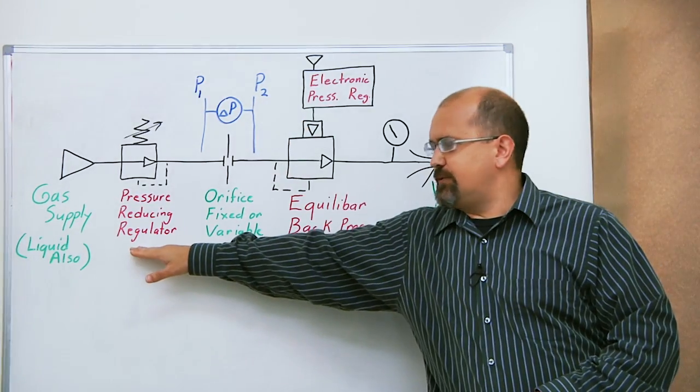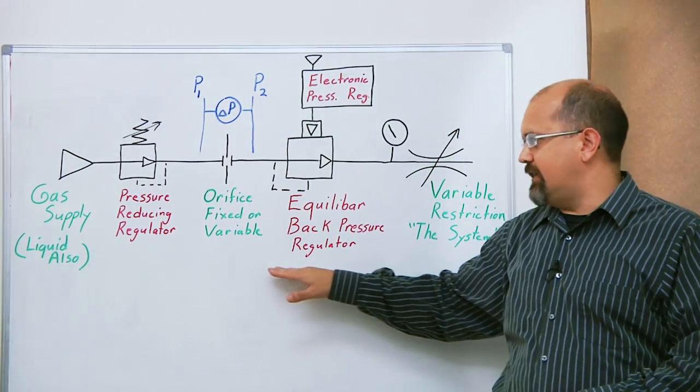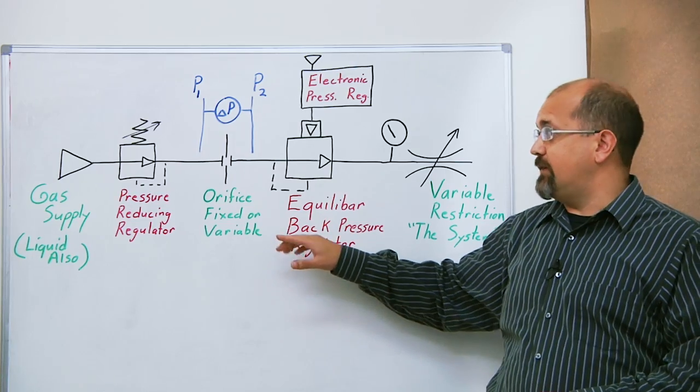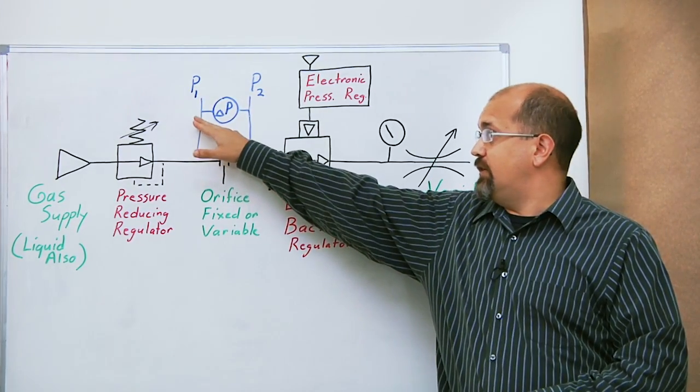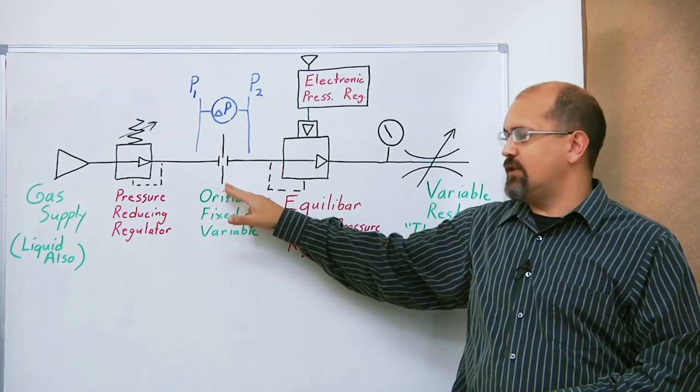Now between the pressure reducing regulator and the back pressure regulator, I've in effect set P1 and P2, which now allows me to control the differential pressure across the orifice.